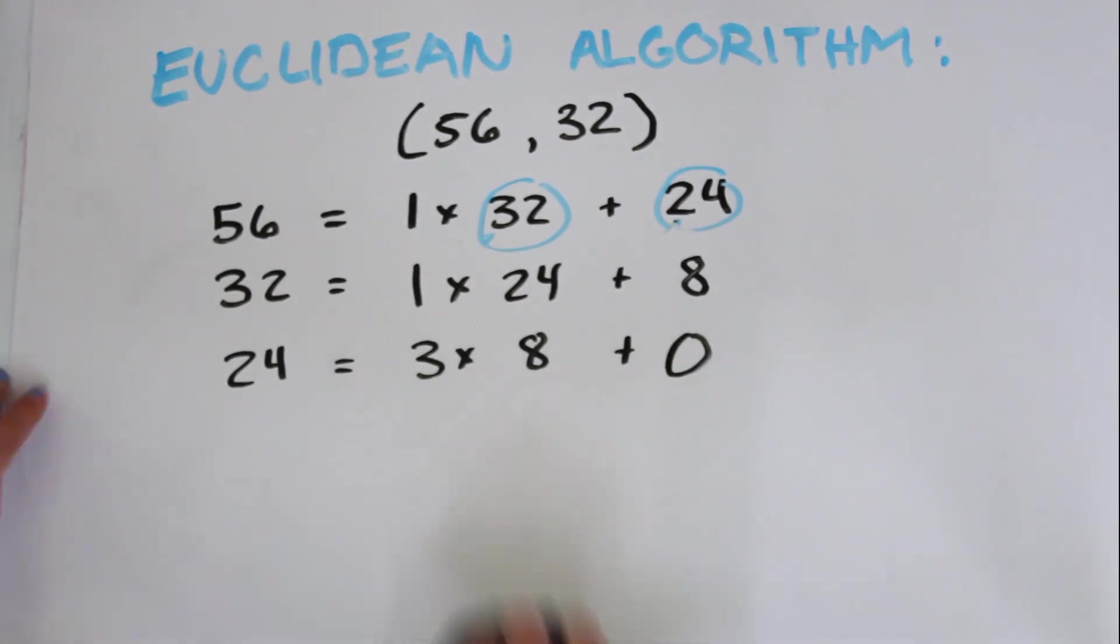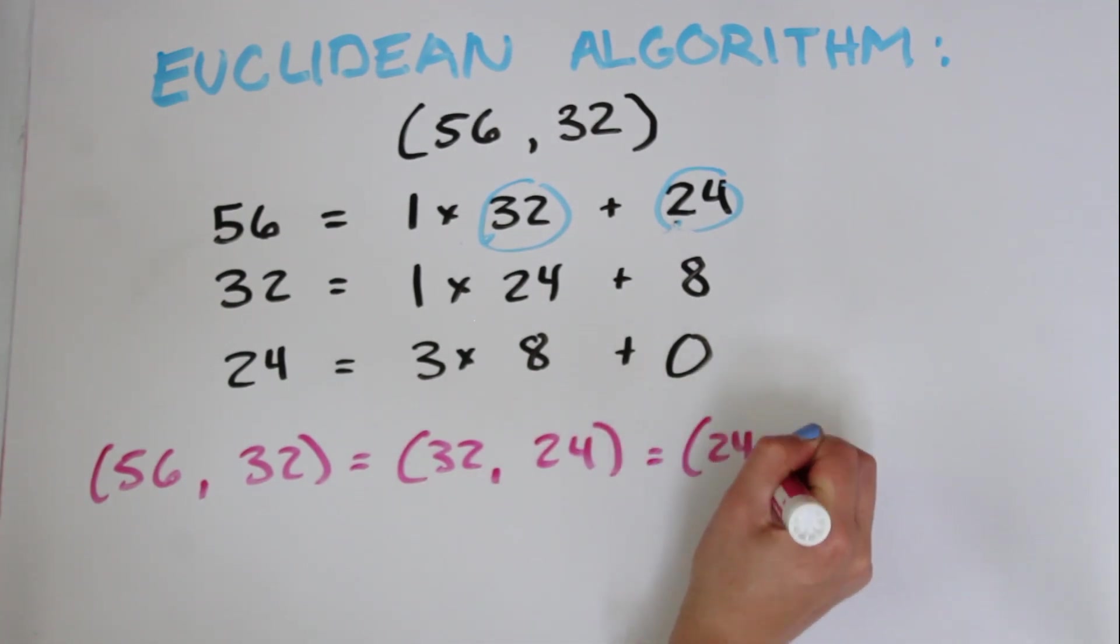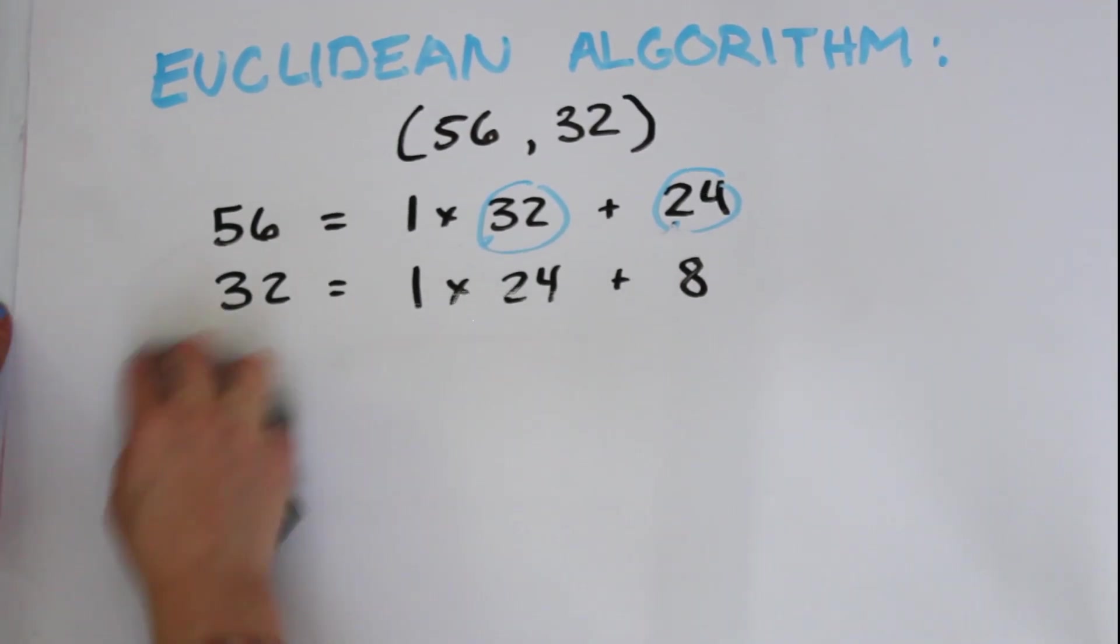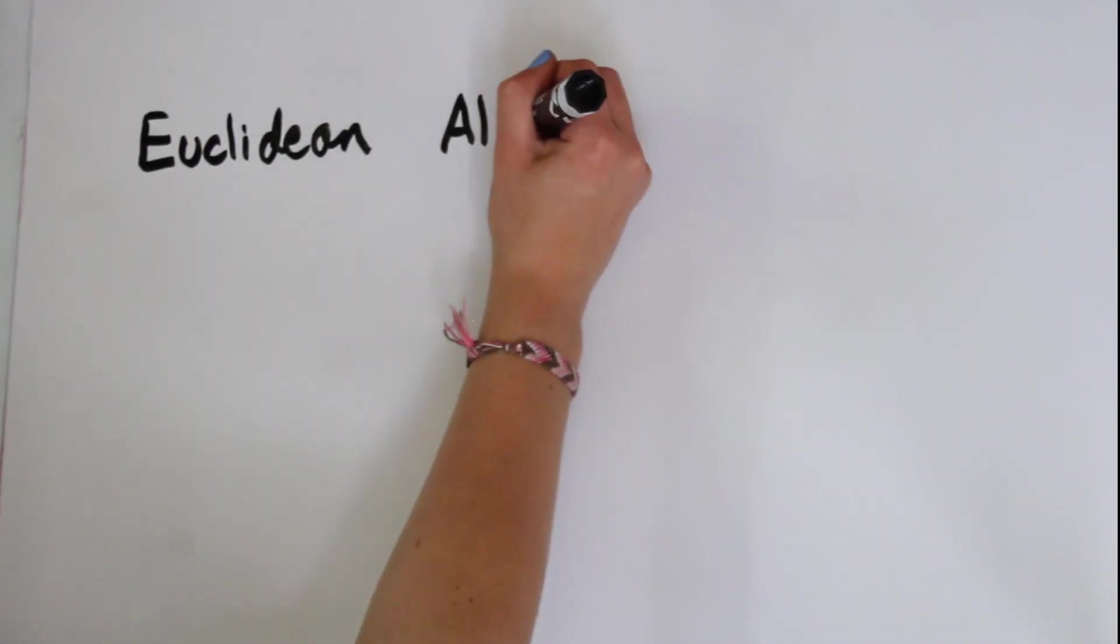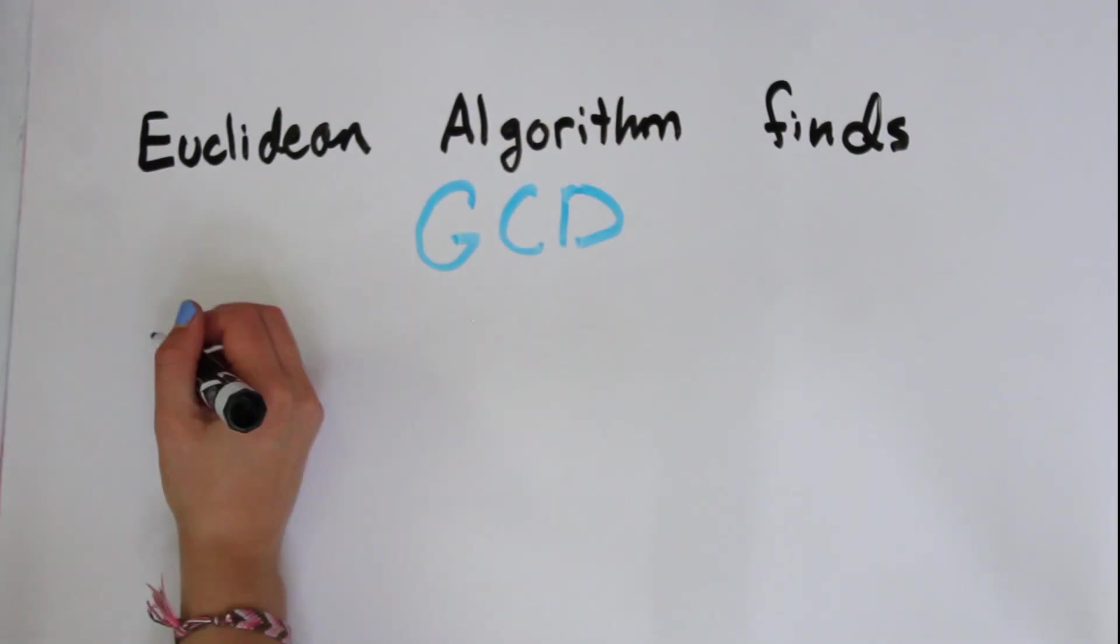So then we can conclude that the greatest common divisor of 56 and 32 equals that of 32 and 24 equals that of 24 and 8, which equals 8. So the greatest common divisor of 56 and 32 is 8. So you can see that the Euclidean algorithm ends up finding the greatest common divisor between two numbers.